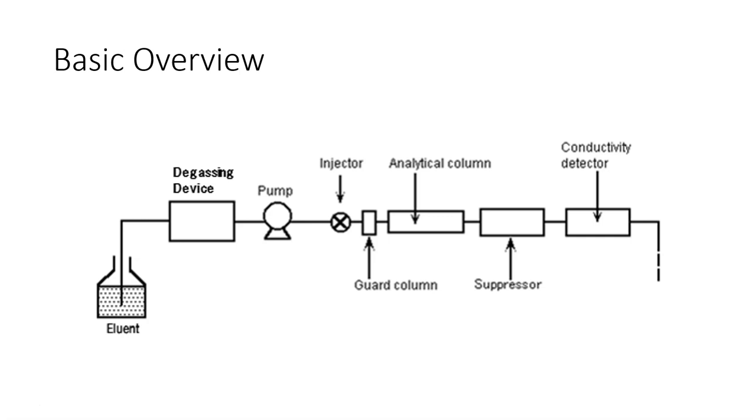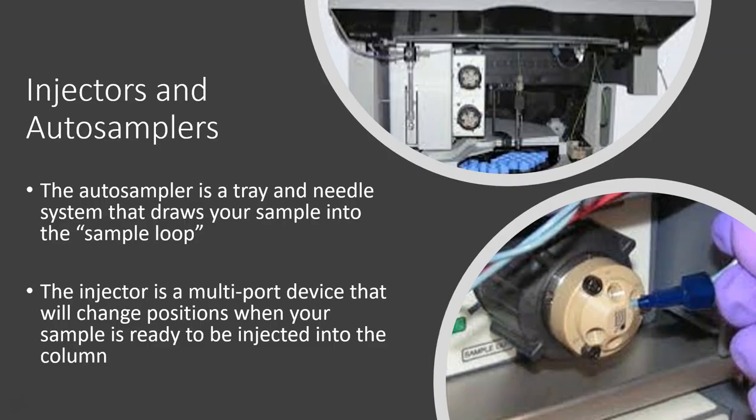So let's talk about how that works. You usually have an injector and an auto sampler. The auto sampler is a tray and needle system that draws your sample into the sample loop. Now the sample loop is a coil of tubing that holds your sample until it is ready to be injected into the column.